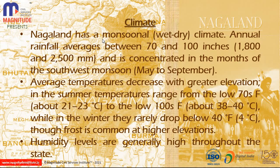Regarding climate, the annual rainfall is 1,800–2,500 mm, with the south-west monsoon arriving from May through September in summer. The temperature varies from 21–23 degrees Celsius to 38–40 degrees Celsius. In winter, the temperature can drop to 4 degrees Celsius, and frost also occurs at high elevations in winter.